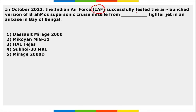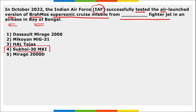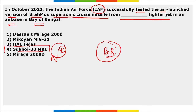Indian Air Force successfully test-fired the air-launched version of the BrahMos Supersonic Cruise Missile from a Sukhoi Su-30MKI fighter jet at an airbase in the Bay of Bengal. This is a long-range version of a supersonic weapon system with a range of 1,500 kilometers, developed by BrahMos Aerospace — a joint venture between India and Russia.